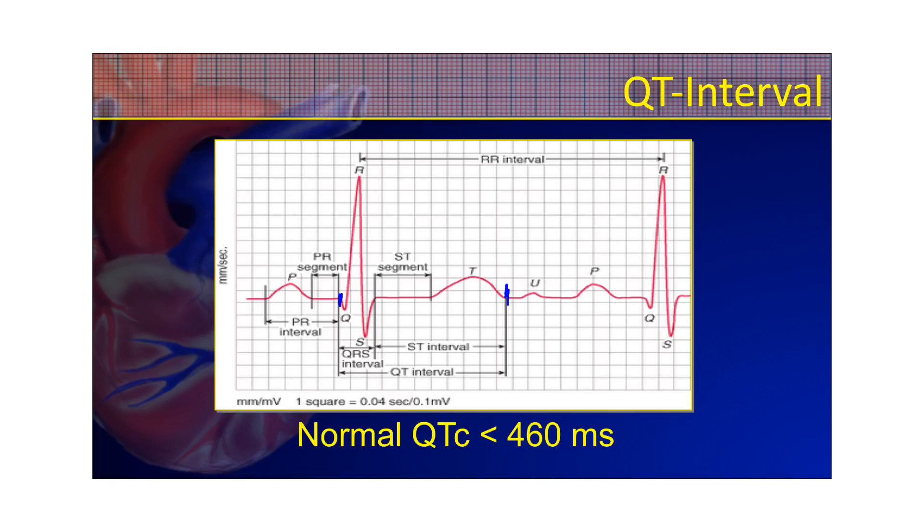And what we really want to identify is what we call the QTc, which is the corrected QT interval. And the monitor will use something called Bazett's formula, so you don't have to memorize it. That's what you're really looking at, because a normal QT interval changes depending on the patient's heart rate. And what we call normal is anything less than 460. That should be a good rule of thumb. And as you approach 500, so anything greater than 500, that's when someone's really at high risk for lethal arrhythmias. So pay attention to the QT interval.